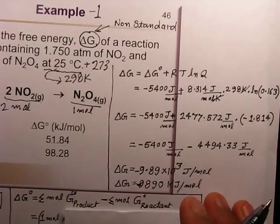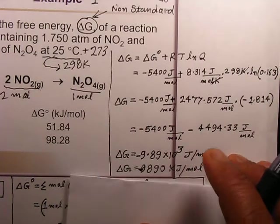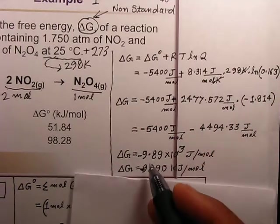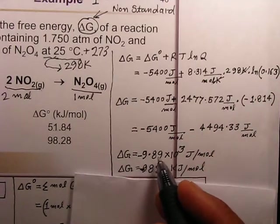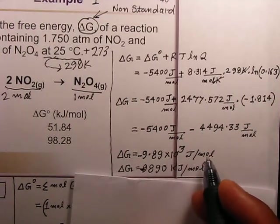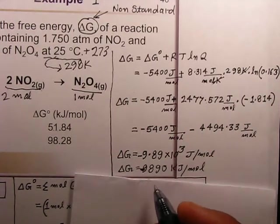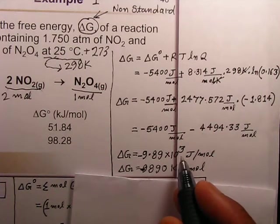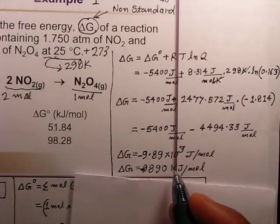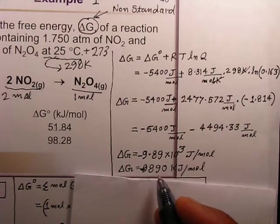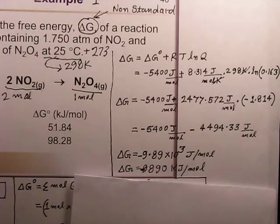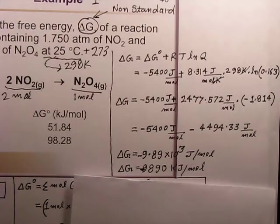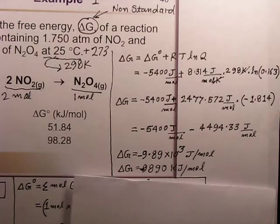Adding these together gives delta G equal to minus 9.89 × 10³ joules per mole, which we can write as minus 9.89 kJ/mol. This concludes the first example of how to calculate delta G under non-standard conditions.